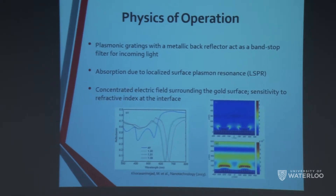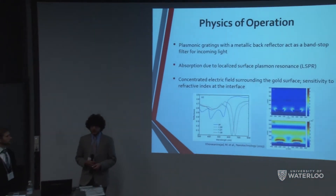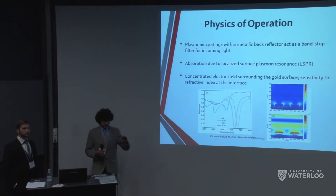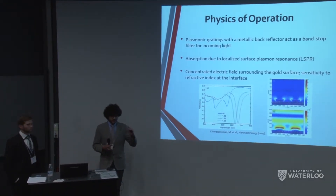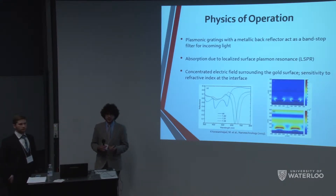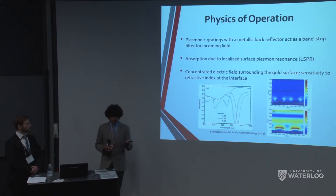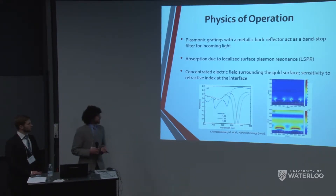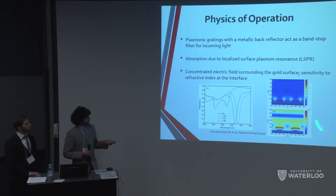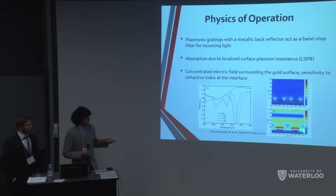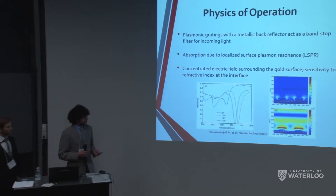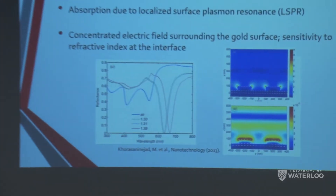The absorption is due to localized surface plasmon resonance. When you shine light on the structure, some of the energy at specific frequencies transfers to the collective oscillation of the surface electrons on the gold surface and therefore gets absorbed, while the rest is reflected back possessing structural color. Computer simulations show that the electric and magnetic fields of the incident light are concentrated on the top surface of the gold, and therefore there is significant sensitivity to the refractive index of the surrounding medium.